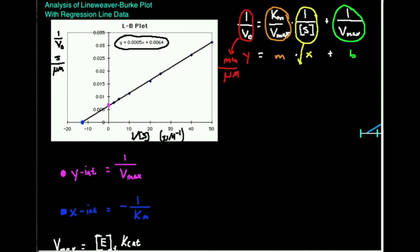The way the Lineweaver-Burk plot works is you're going to plot one over the initial rate versus one over the substrate concentration. Notice that the y-axis and the x-axis are both reciprocals. Therefore, you also call Lineweaver-Burk plots double reciprocal plots.